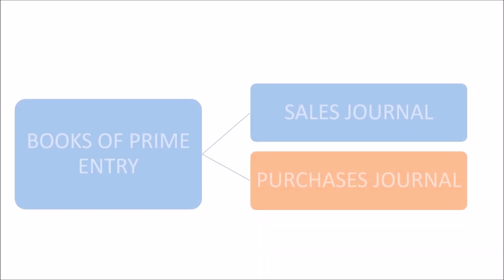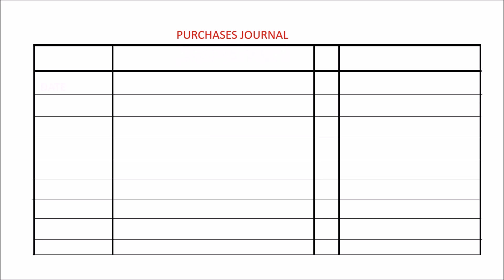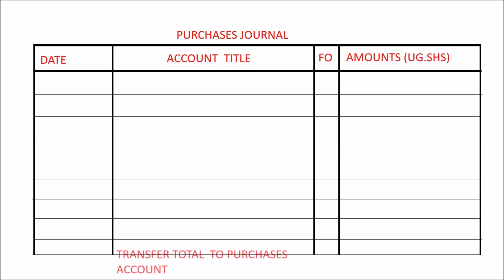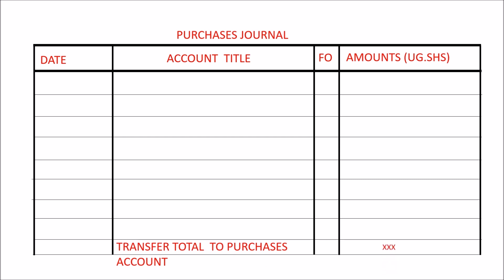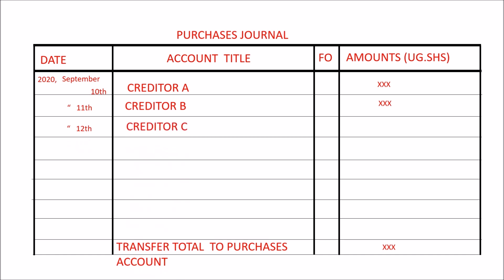Then we have the purchases journal, which is used to record credit purchases on a daily basis. The total of the purchases journal is debited in the purchases account in the general ledger, and the individual creditors' accounts are credited with their respective amounts in the purchases ledger. The debiting and crediting I'm referring to here is in reference to the double entry system of accounting, which I'll be explaining more deeply in upcoming sessions. So don't worry if you don't understand what I mean when I say something is debited or credited — as long as you've understood the function of the purchases journal, that is enough for this session.